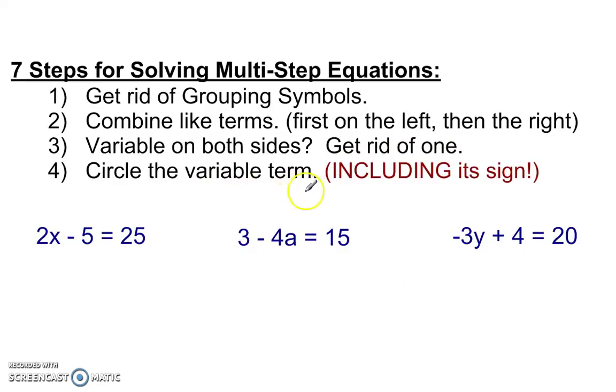Next, circle the variable term including its sign. So I have 2x. We want to circle that. Here we have 4a, but that negative sign goes with it. The sign in front of a number goes with the number. Here we have negative 3y.